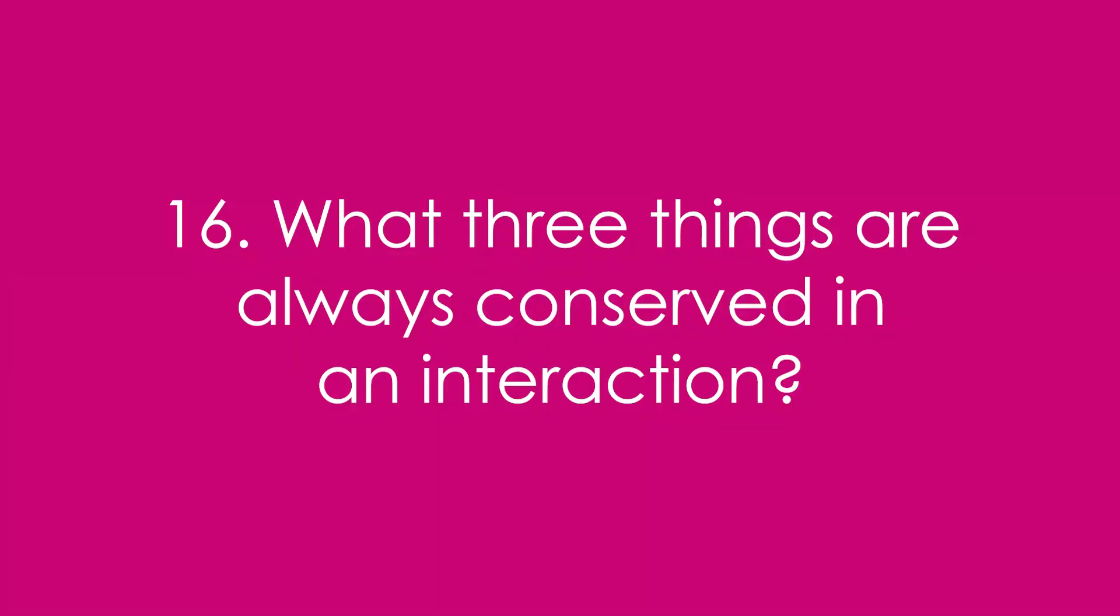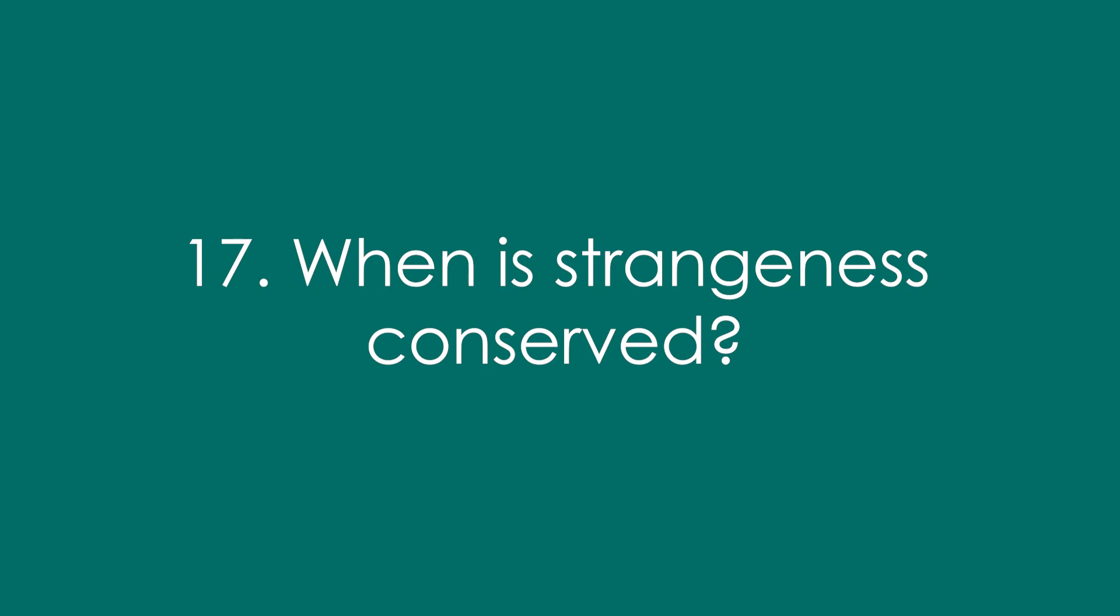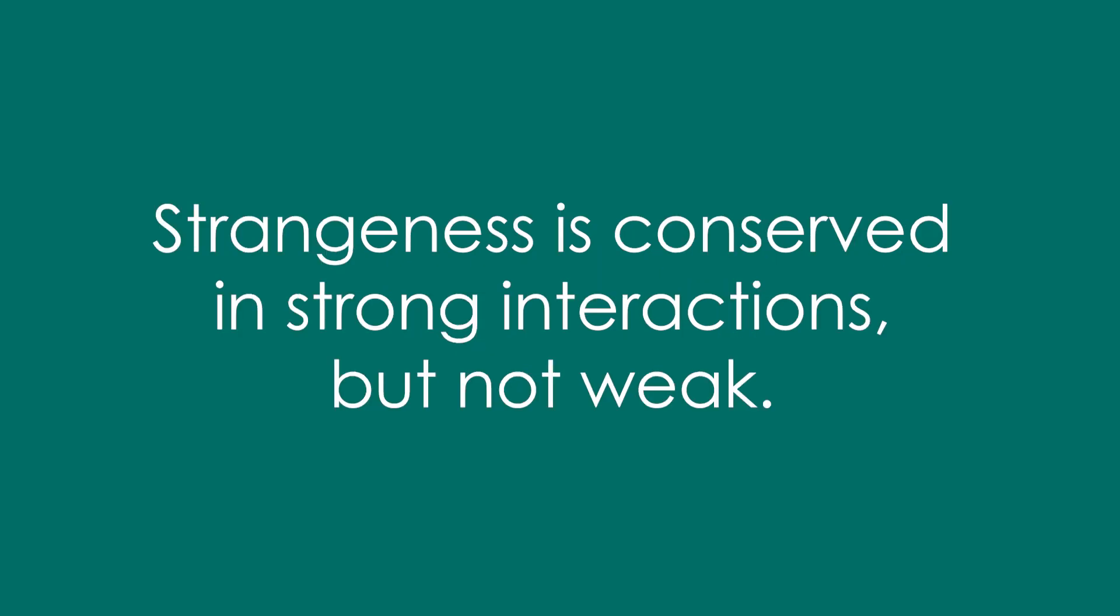16. What three things are always conserved in an interaction? Charge, baryon number, and lepton number. 17. When is strangeness conserved? It's conserved in strong interactions, but not weak.